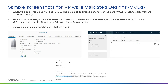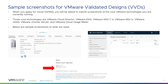The core technologies include VMware Cloud Director, VMware ESXi, VMware NSX-T or VMware NSX-V, VMware vSAN, VMware vCenter Server, and VMware Cloud Usage Meter. The screenshots on this page show examples of VMware ESXi, VMware Cloud Director, and VMware vCloud Usage Meter that a partner is currently running.